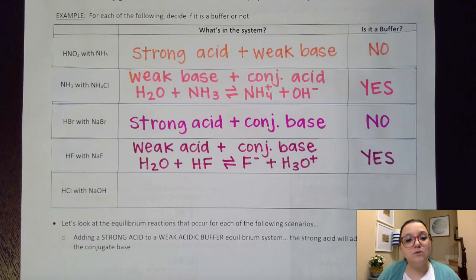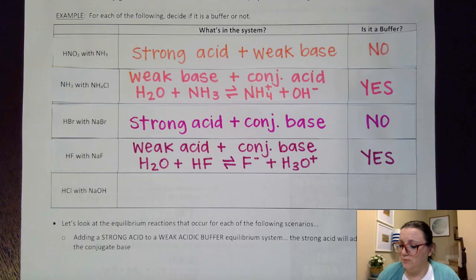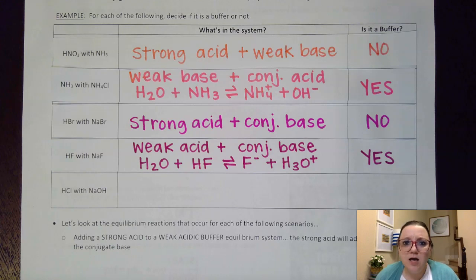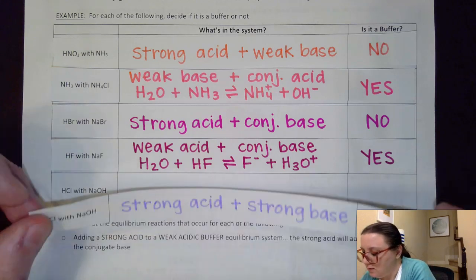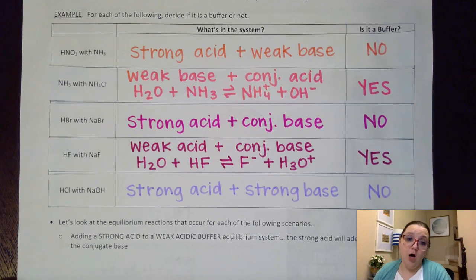The last example: HCl with NaOH. HCl is an acid, but there are two problems. Not only do I not see a chloride ion in the other partner, but HCl — hydrochloric — is a strong acid. Not only that, sodium hydroxide is a strong base. So that is definitely a no on being a buffer system.